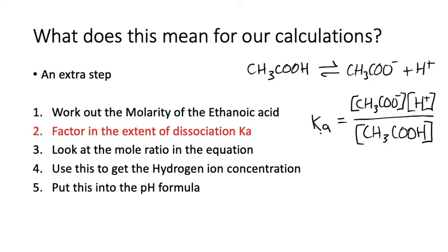For a strong acid like HCl, Ka would be very high, so it wasn't involved in our calculations. However, for ethanoic acid, a weak acid, Ka is quite low.